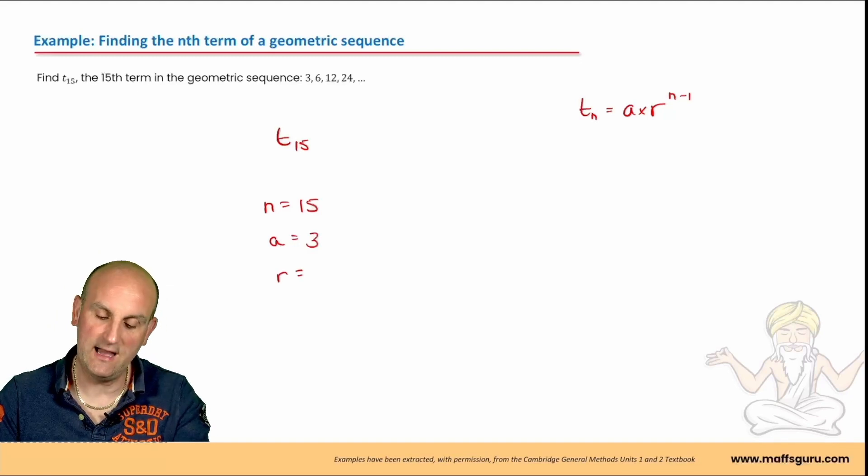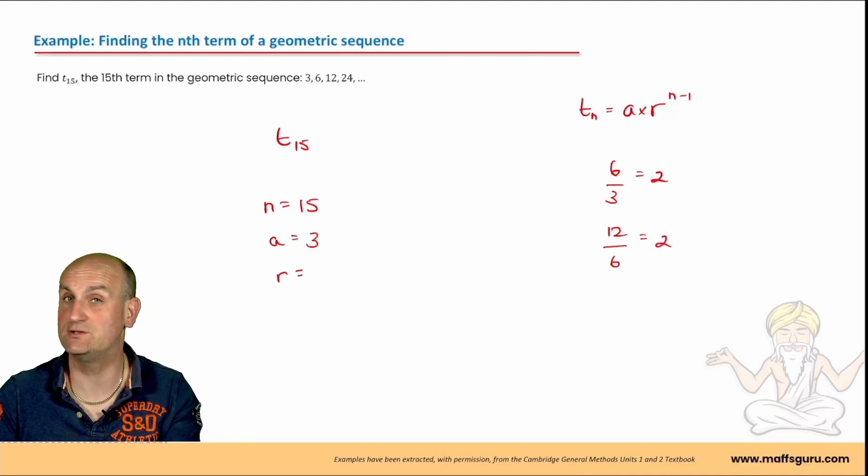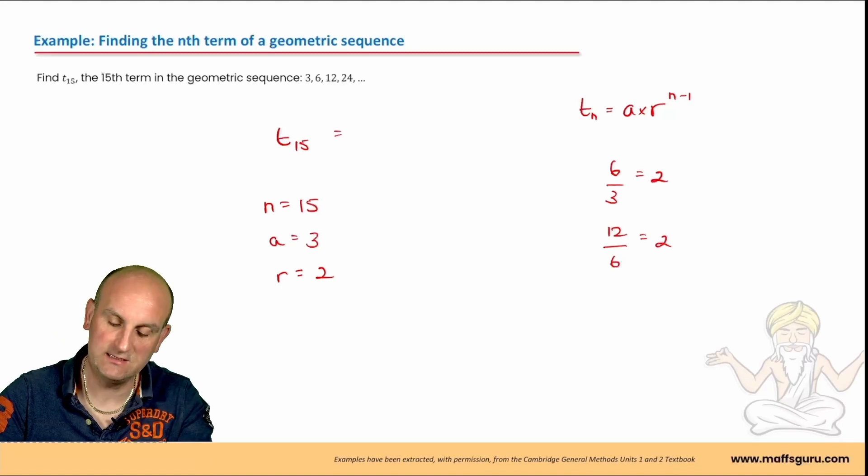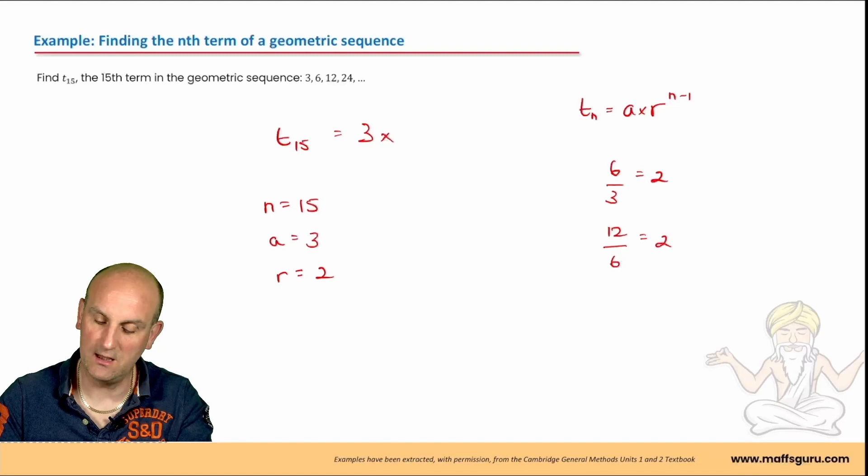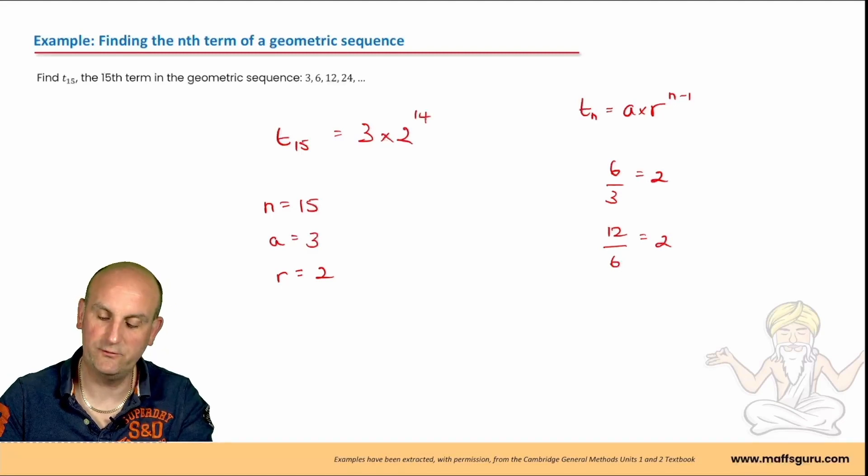So what do we need to know? We need to know our value of r, our common ratio. We're going to take the second term, which is 6, divide it by the first term, which is 3. That gives me 2. I'm just going to check, is 12 divided by 6 also 2? Yes. So my common ratio is 2. How do I now find t of 15? I do a, which is 3, times r, which is 2, to the power of n minus 1, which is 14.